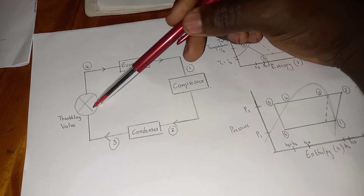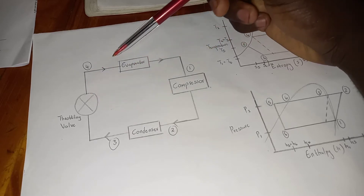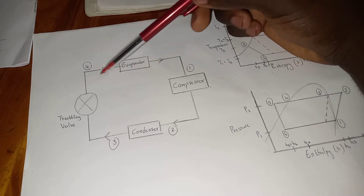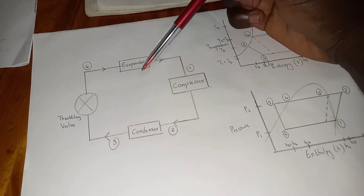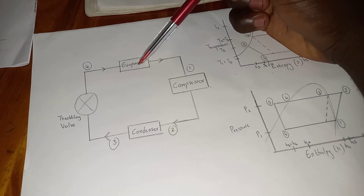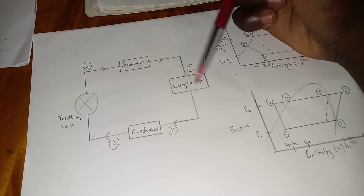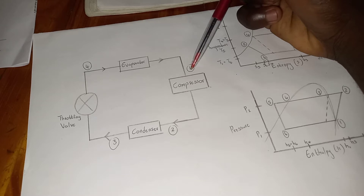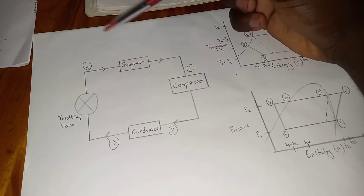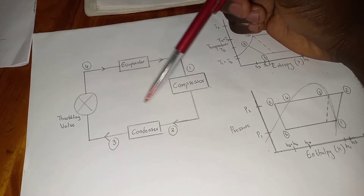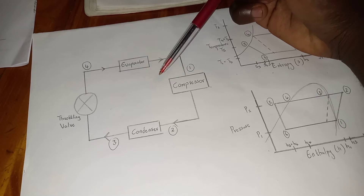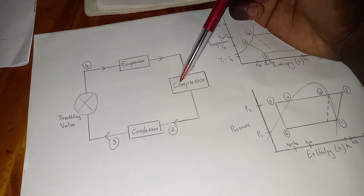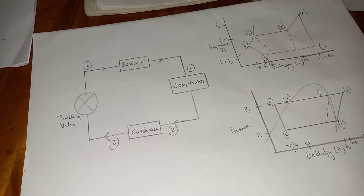From the throttling valve it flows to the evaporator, and the evaporator heats this liquid and evaporates it into a dry saturated vapor when it enters the compressor. This cycle continues throughout the refrigeration system.